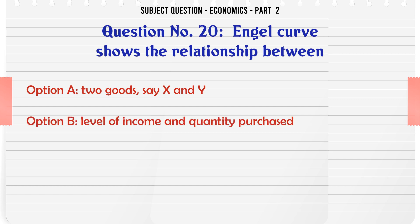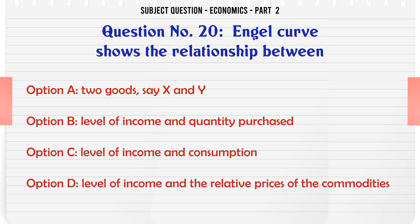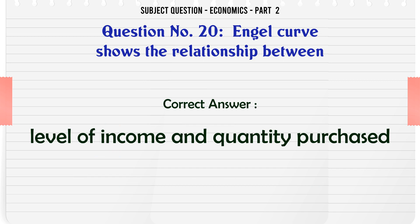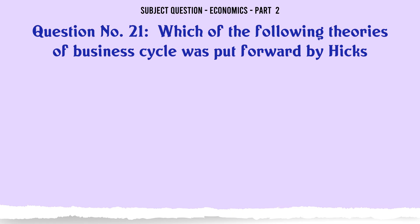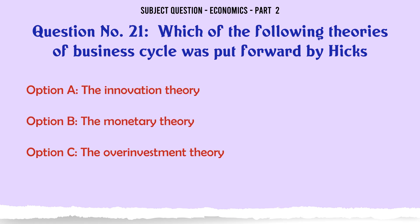Engel curve shows the relationship between: A. Two goods say X and Y. B. Level of income and quantity purchased. C. Level of income and consumption. D. Level of income and the relative prices of the commodities. The correct answer is: Level of income and quantity purchased.